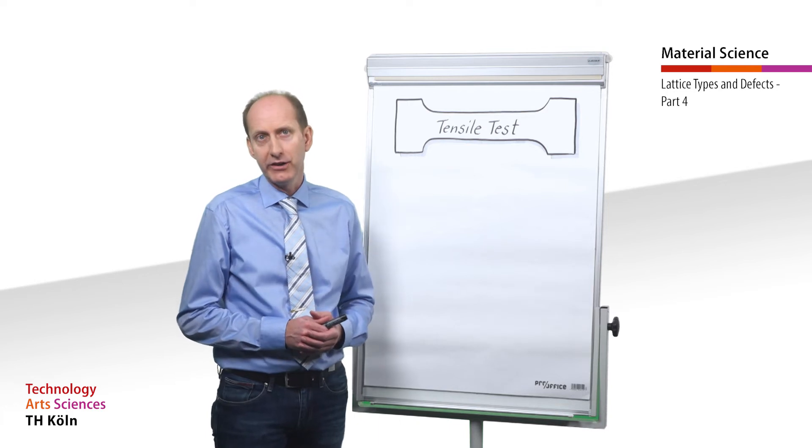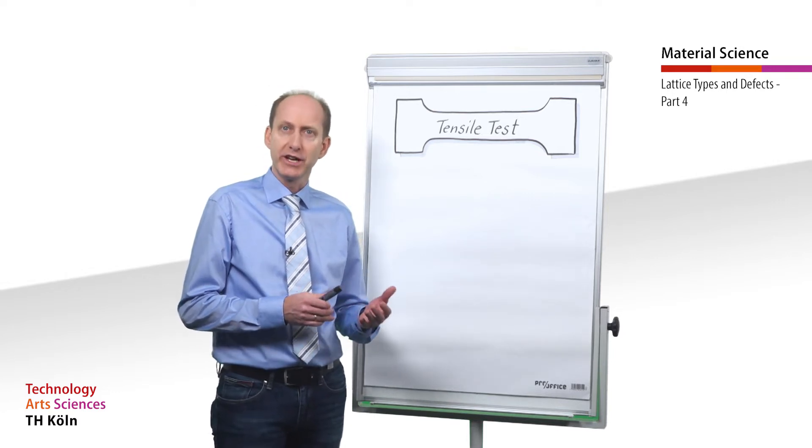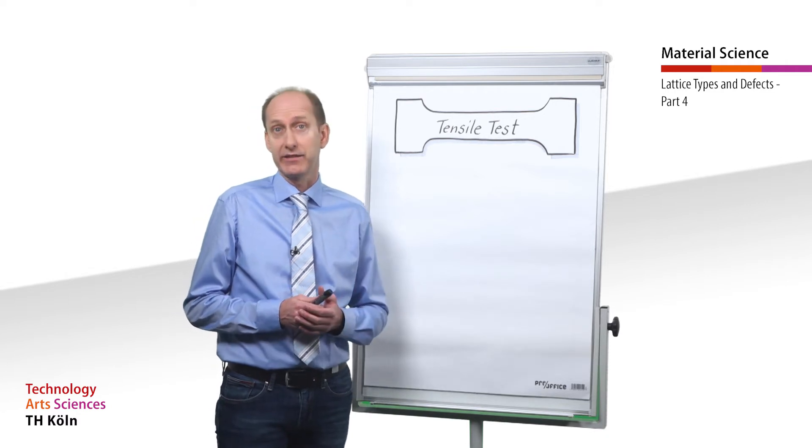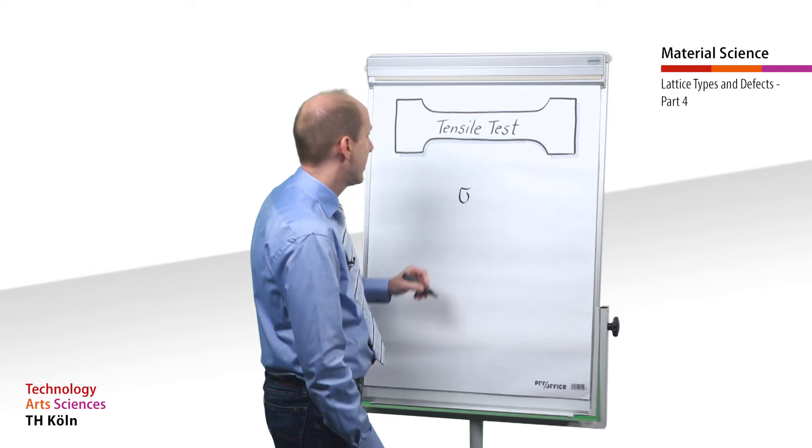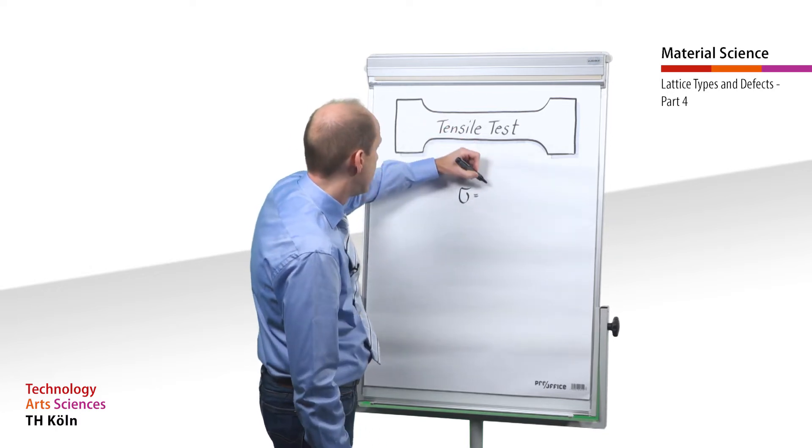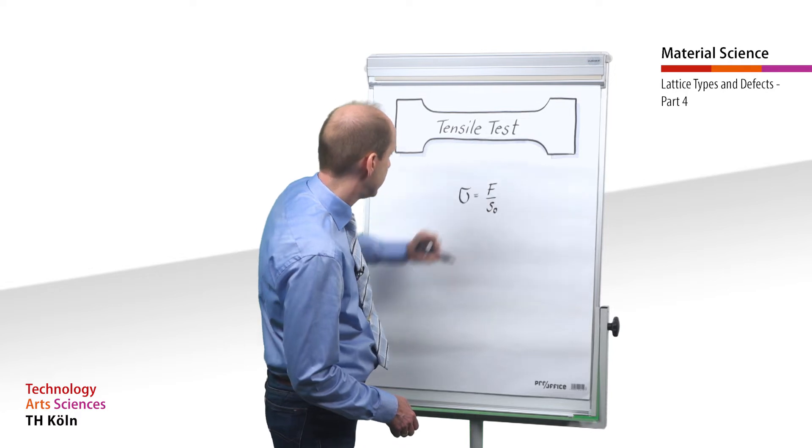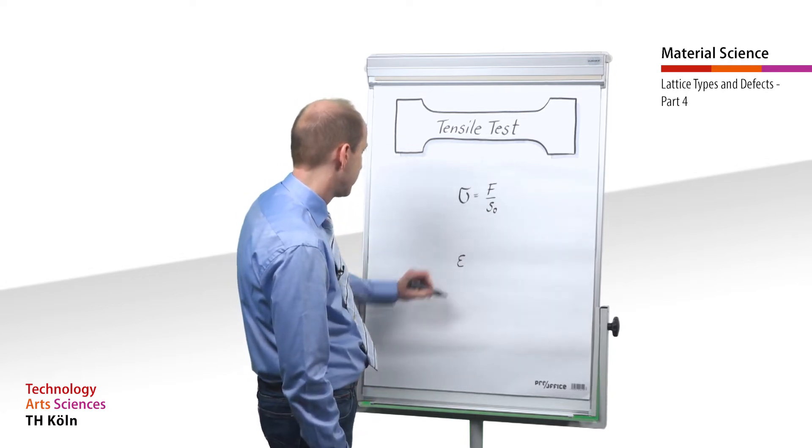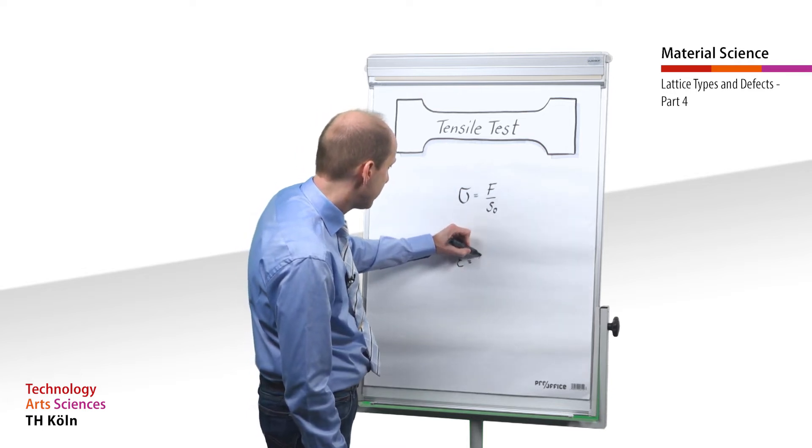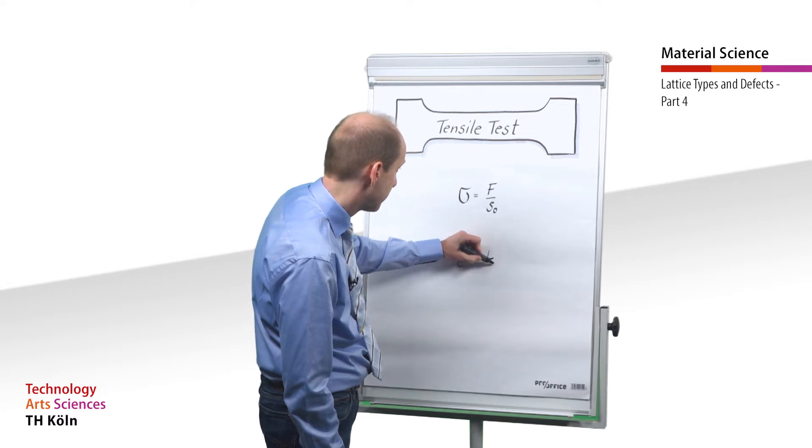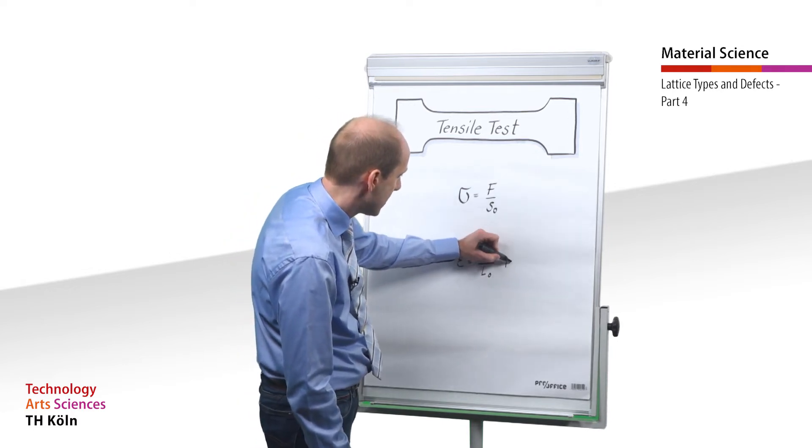To obtain characteristic values of the material, rather than only information about the forces that a certain sample can withstand, the forces and the changes in length must be put in relation to the tensile test sample's geometric data. Thus, the tensile stress sigma is determined by the ratio of the force F to the original cross-section of the sample S0. The strain epsilon, that is the relative change in length in percent, is determined by the ratio of the increase of the sample's gauge length delta L to the original gauge length L0 times 100%.